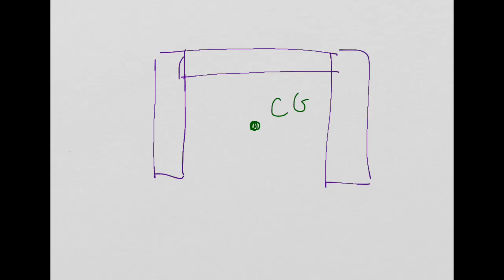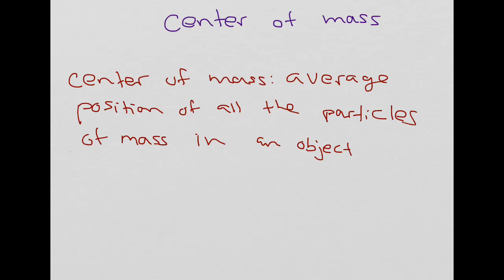So it's important to talk about the difference between center of gravity and center of mass. I have the definition of center of mass as the average position of all the particles of mass in an object. Recall that center of gravity is the average position of the weight of the object. So the difference is weight versus mass.